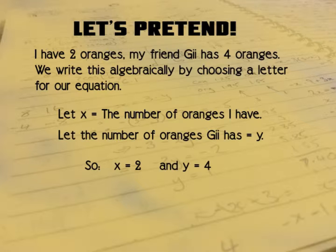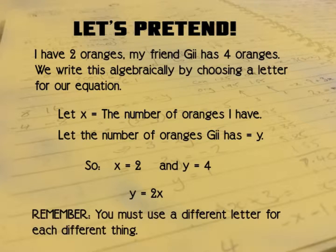So now we can talk about the relationship between Y and X. So if X equals 2 and Y equals 4, then Y equals 2X. Because I have two oranges and my friend Gil has four oranges, that means that my friend has two times the number of oranges I have.